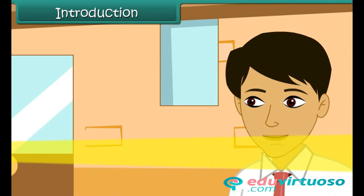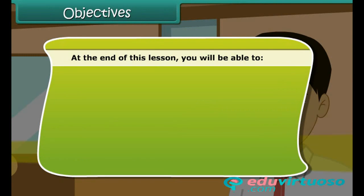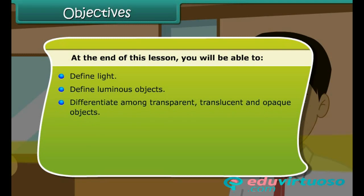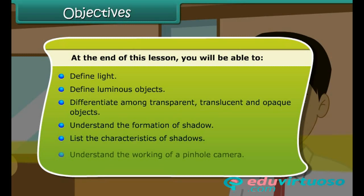You know that Aman was responsible for this mischief, however you are not sure how he managed it. In this lesson, we will discuss light, shadows, and reflection in detail. At the end of this lesson, you will be able to define light, define luminous objects, differentiate among transparent, translucent, and opaque objects, understand the formation of shadows, list the characteristics of shadows, and understand the working of a pinhole camera.